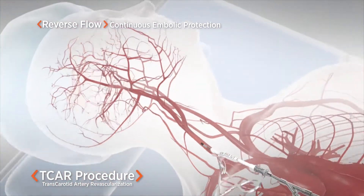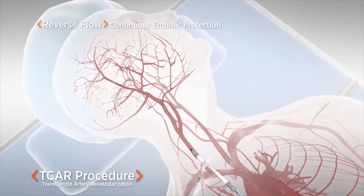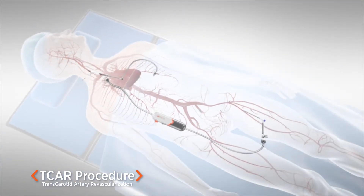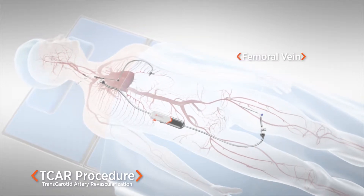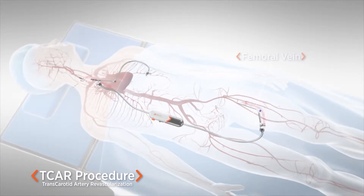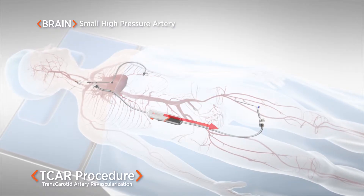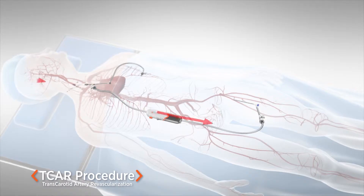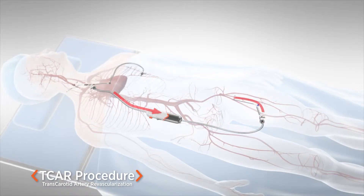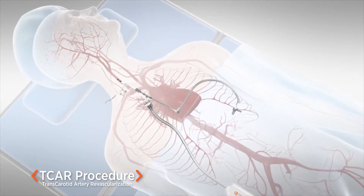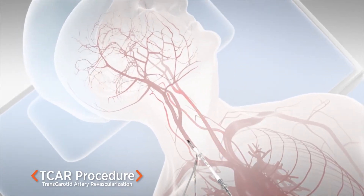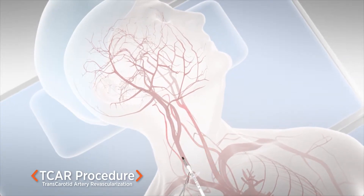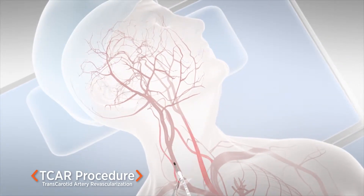Flow reversal keeps debris moving away from the brain, protecting it from dangerous emboli. The sheath is connected to a circuit outside the body that directs blood flow into the femoral vein. The connection between the high-pressure arterial system in the brain and the low-pressure vein in the leg creates a pressure gradient, causing blood to move backwards in the carotid artery. Clinical studies have shown this temporary redirection of blood flow is not problematic because the brain is fed by multiple arteries, which maintains cerebral blood flow throughout the procedure.